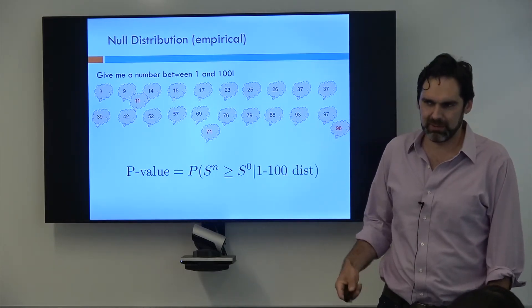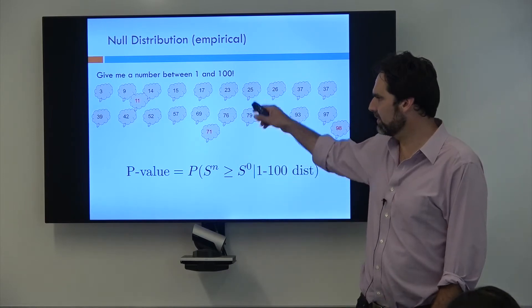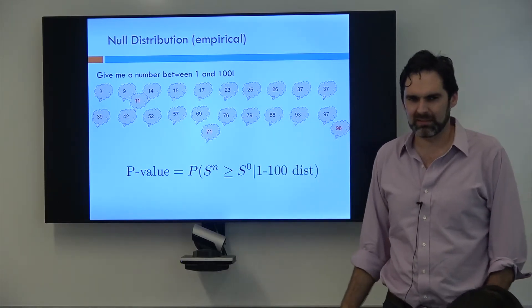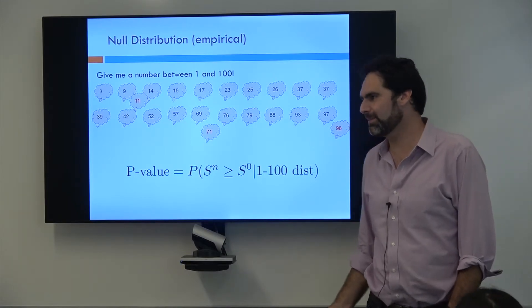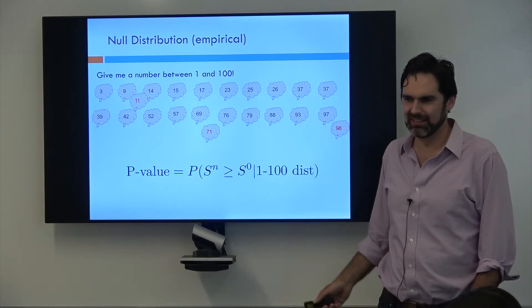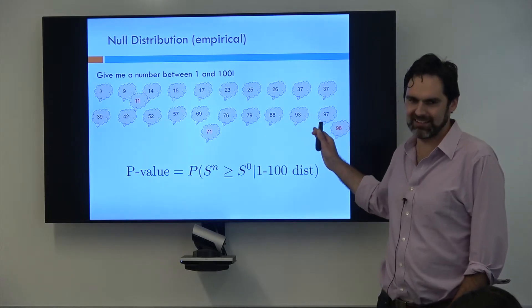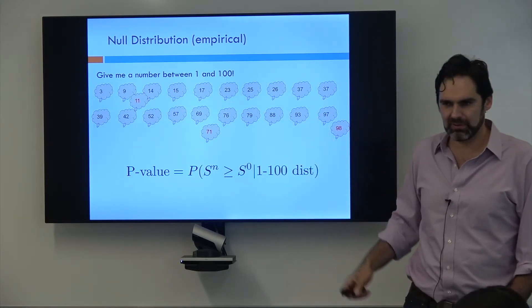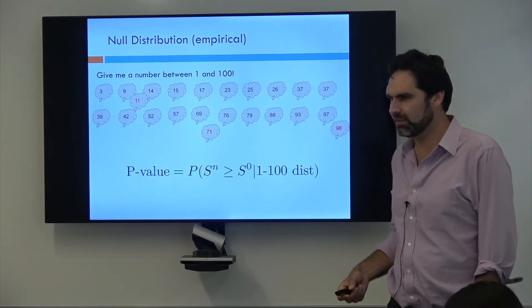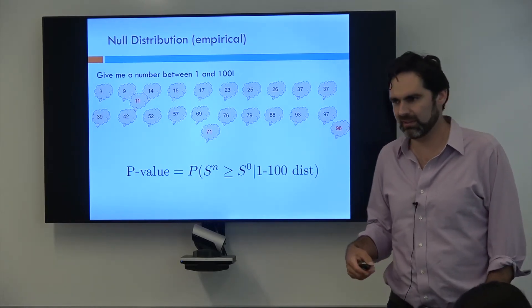So my p-value calculation is very much based on how my random sampling works. So if I wanted my p-value to be more accurate under this empirical distribution, what should I do? Yeah, I should ask more people. If I were to ask like a bazillion people, I would probably know really accurately where 98 falls. And so the more people you sample when getting an empirical distribution, the more accurate your p-value is going to be. So in this case your p-value is really just an estimate of what the true p-value is.